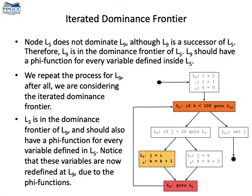The definitions of i, j, and k at l0, l1, and l2 do not lead to phi functions, as the dominance frontier of that basic block is empty. But definitions of j and k at l5, l6, l7, and l8 do. The dominance frontier of the block at l5 and l6 contains l9, and the dominance frontier of l9 contains l3 — that's the iterated dominance frontier. Then we are done with the iterated dominance frontier of l5 and l6.